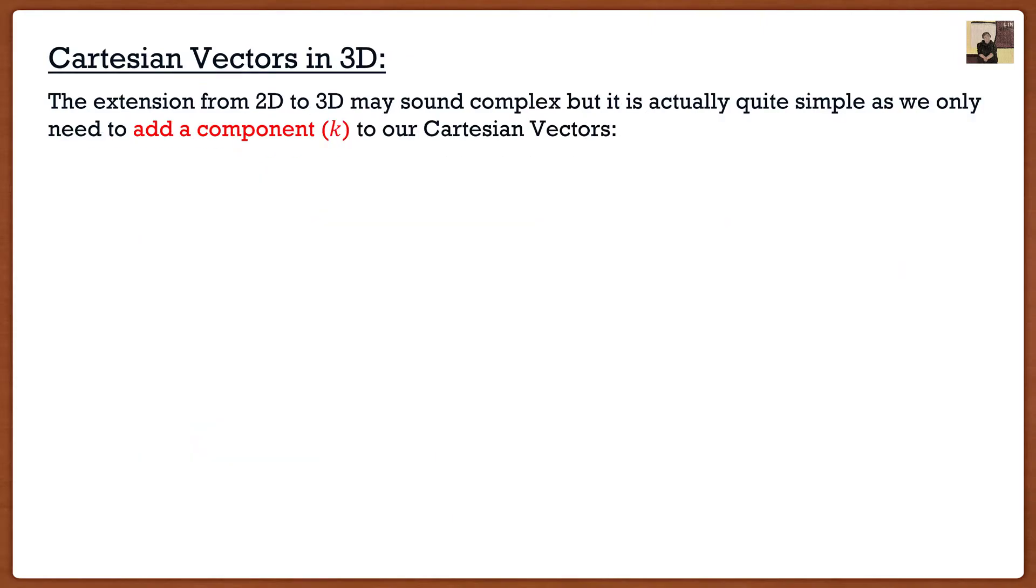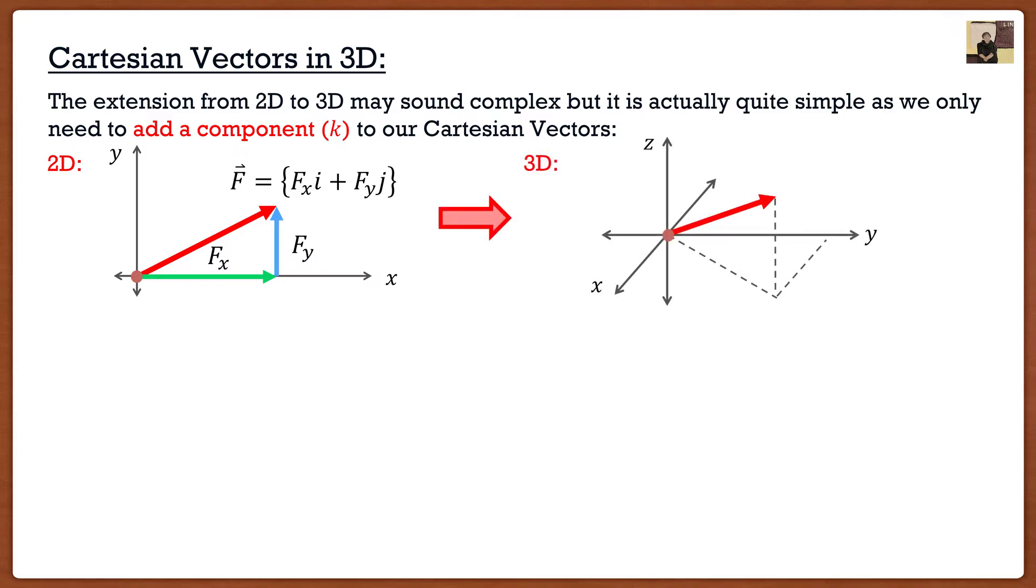The extension from 2D to 3D may sound complex, but it's actually very simple because we're only doing one thing, adding a component to our Cartesian vectors. Remember in 2D, if I had a force vector, this can be split into two components, Fx and Fy, and I can write the vector as Fx i plus Fy j. In three dimensions, it's the exact same thing.